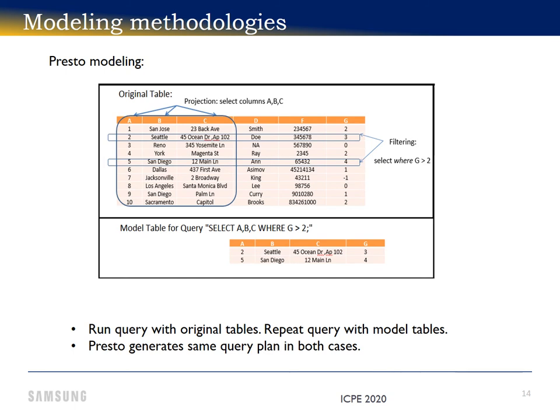Because this model also assumes that the storage device would be capable of filtering and projecting rows and columns at wire speeds. However, if we take into consideration the higher internal flash storage bandwidth, this may be a realistic approximation of the expected speedup.